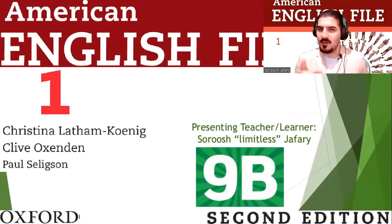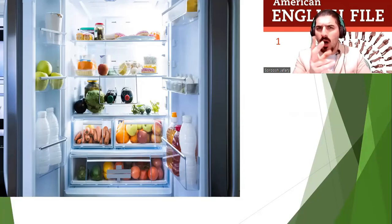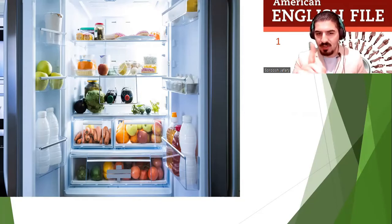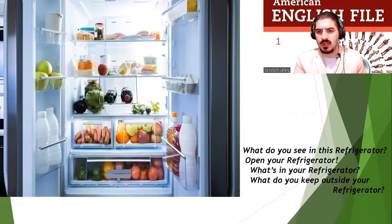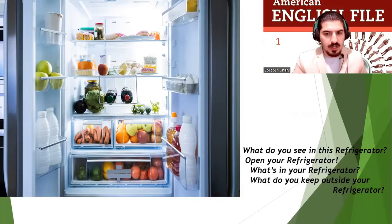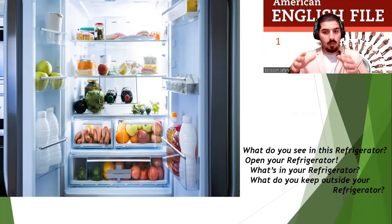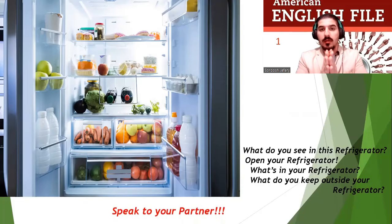Hello everyone. We're going to talk about food — American English File, Second Edition, Book One, Part 9B. Look at the picture. What do you see? What's in the refrigerator? Now open your refrigerator — what's in your refrigerator? What do you keep outside of your refrigerator? Speak with your partner.